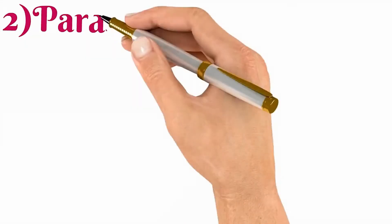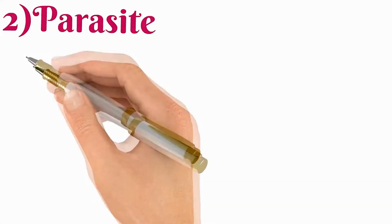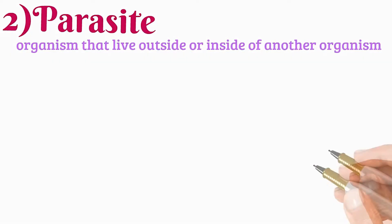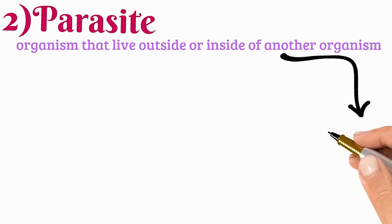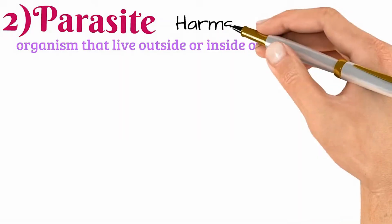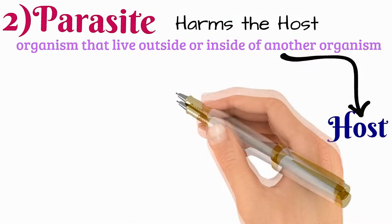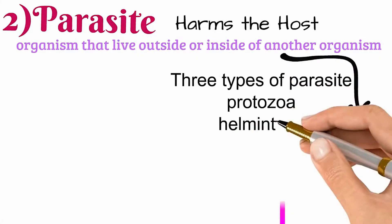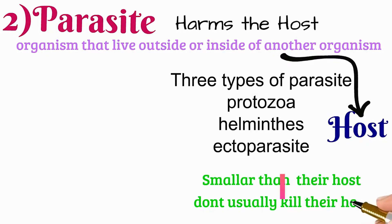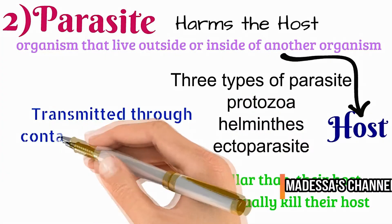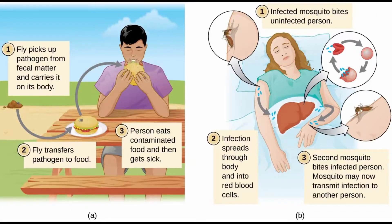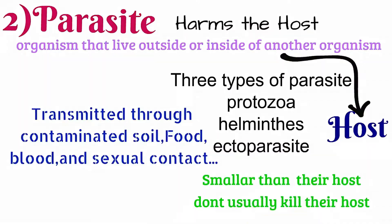Now we have point number two: the parasite. What is a parasite? These are organisms that live outside or inside of another organism. The organism which harbors the parasite is called the host, and a parasite always harms the host in which it is living. There are three types of parasites: protozoa, helminths, and ectoparasites. These are smaller than their host and usually don't kill them. They are transmitted through contaminated soil, food, and blood. We can see how flies and mosquitoes infect a person through food.